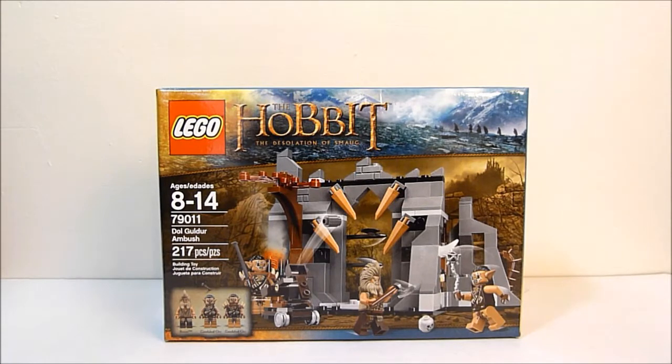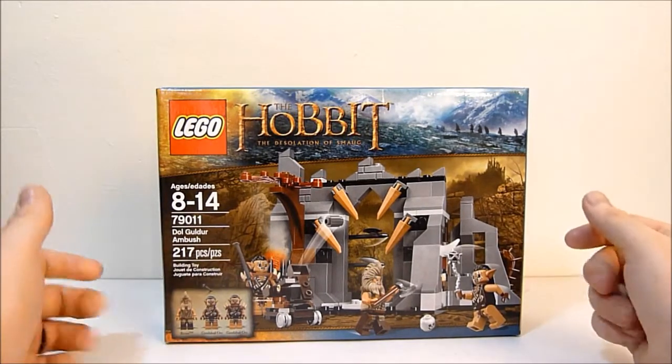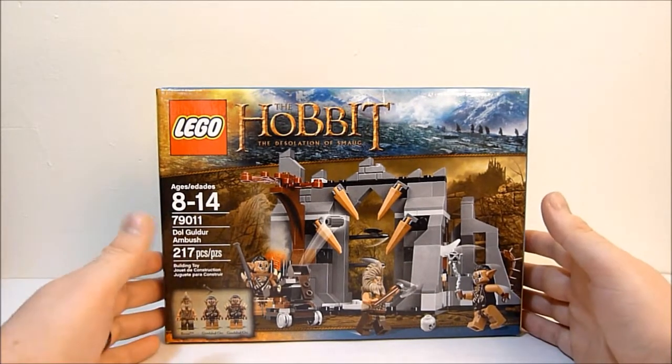What's going on YouTube, Robbie again, and today we're going to be taking a look at one of the new LEGO Hobbit sets. This is from The Hobbit Desolation of Smaug, and this set is set number 79011, Dol Guldur Ambush, and it has 217 pieces and retails for roundabouts 20 bucks.